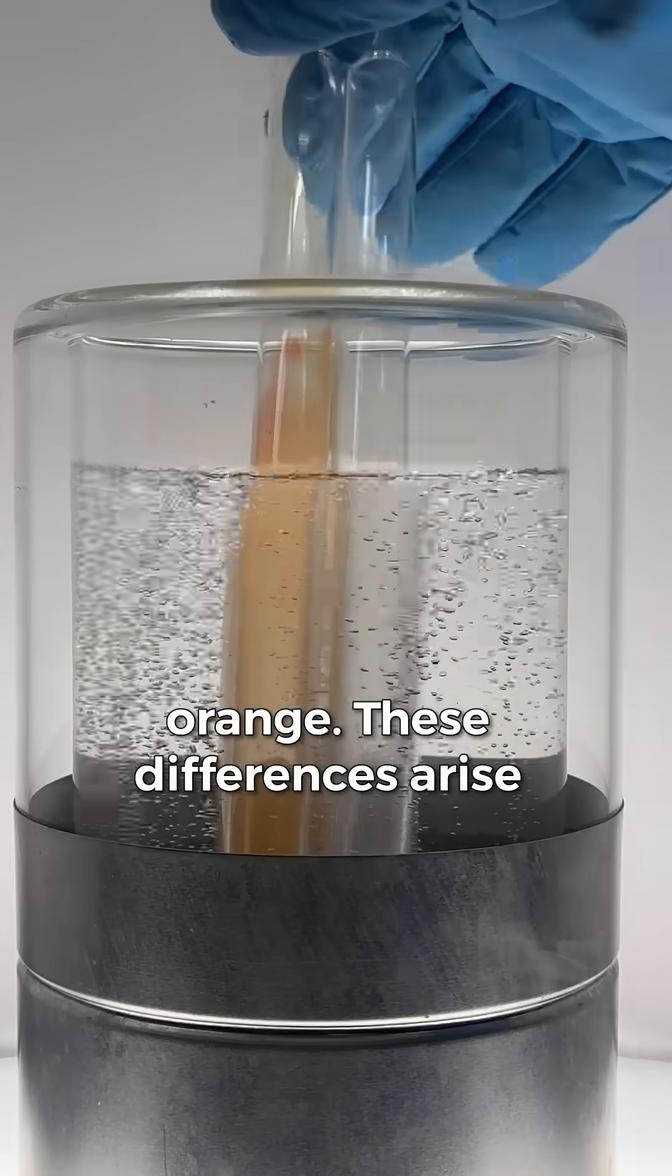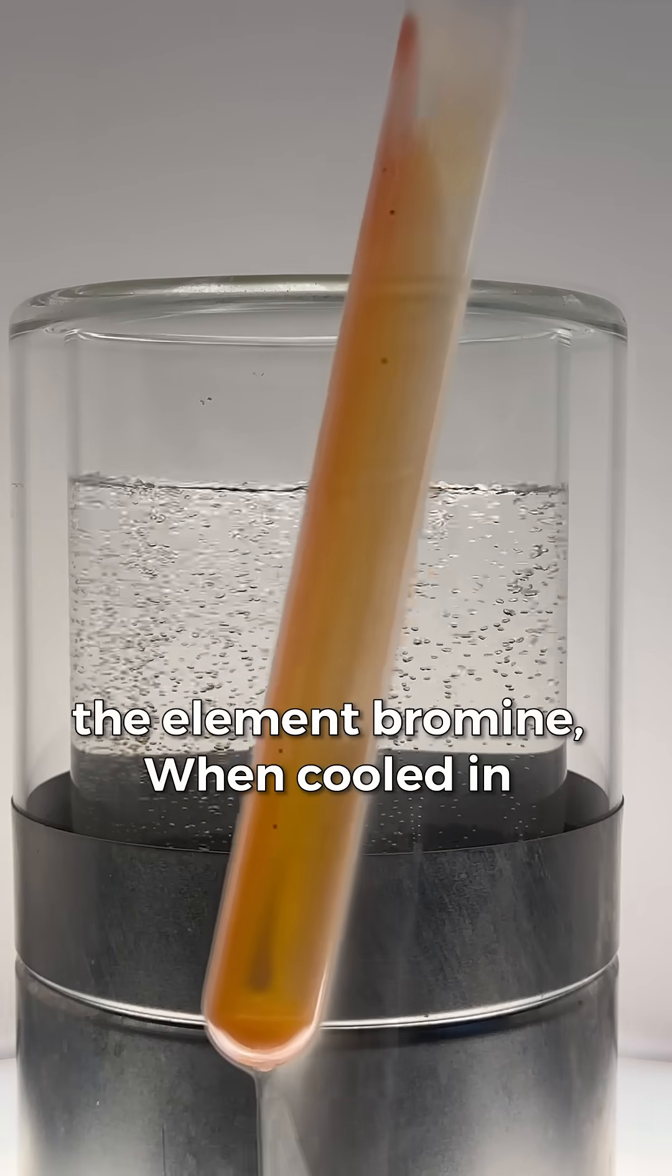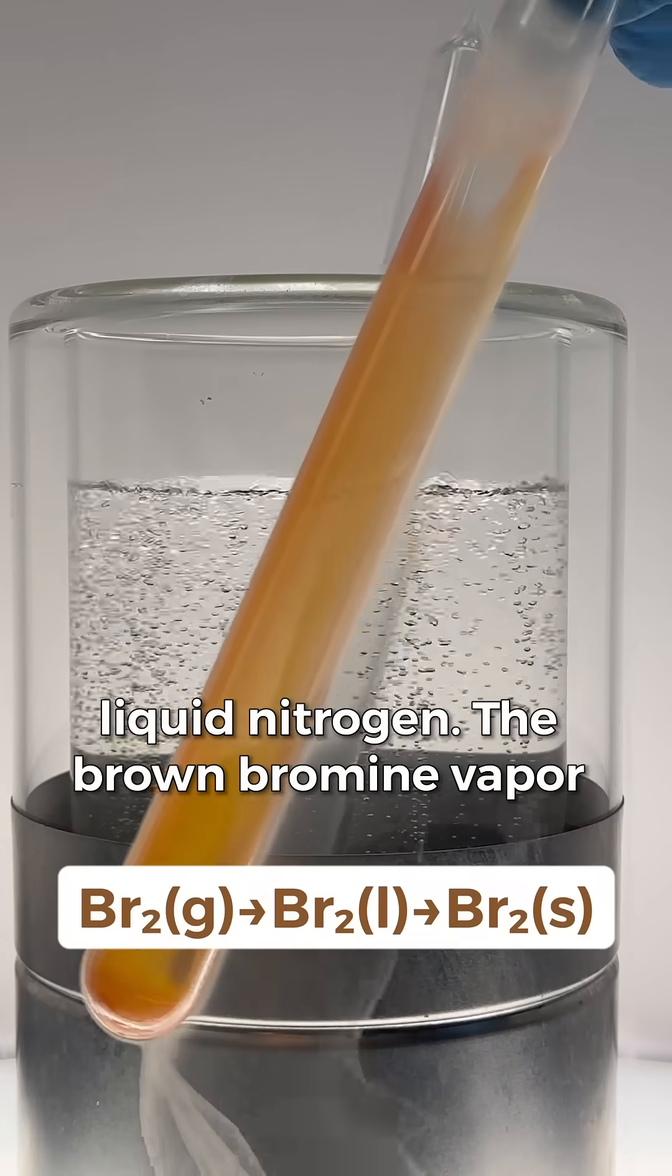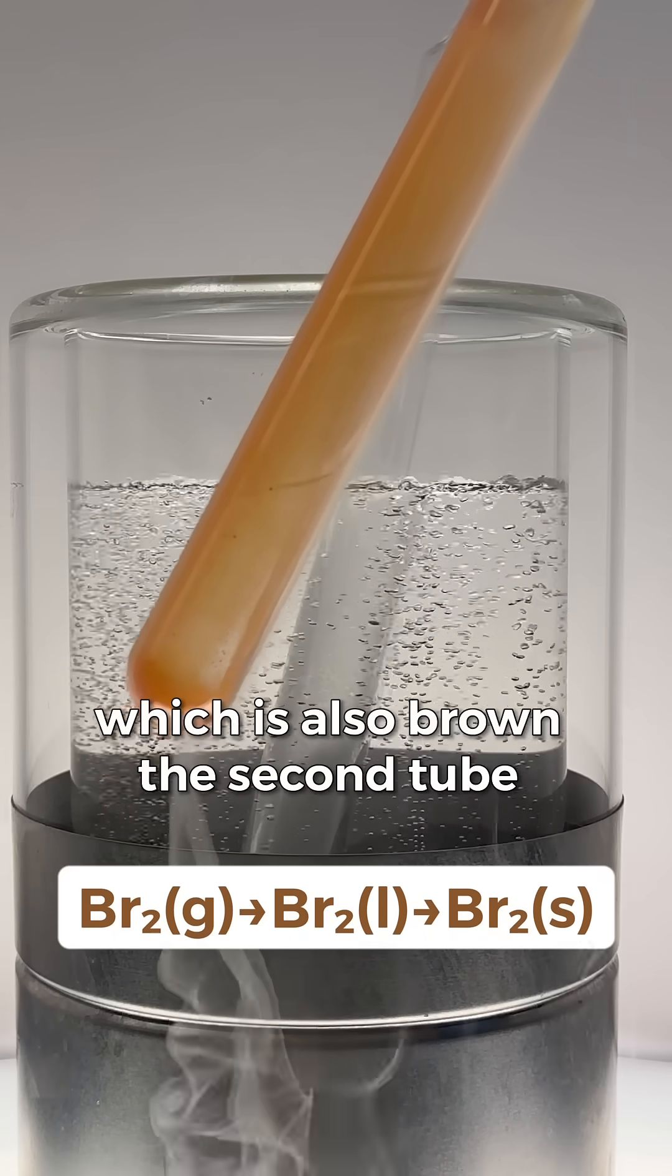These differences arise because each tube contains something different. This first tube contains the element bromine. When cooled in liquid nitrogen, the brown bromine vapor ends up freezing into solid bromine, which is also brown.